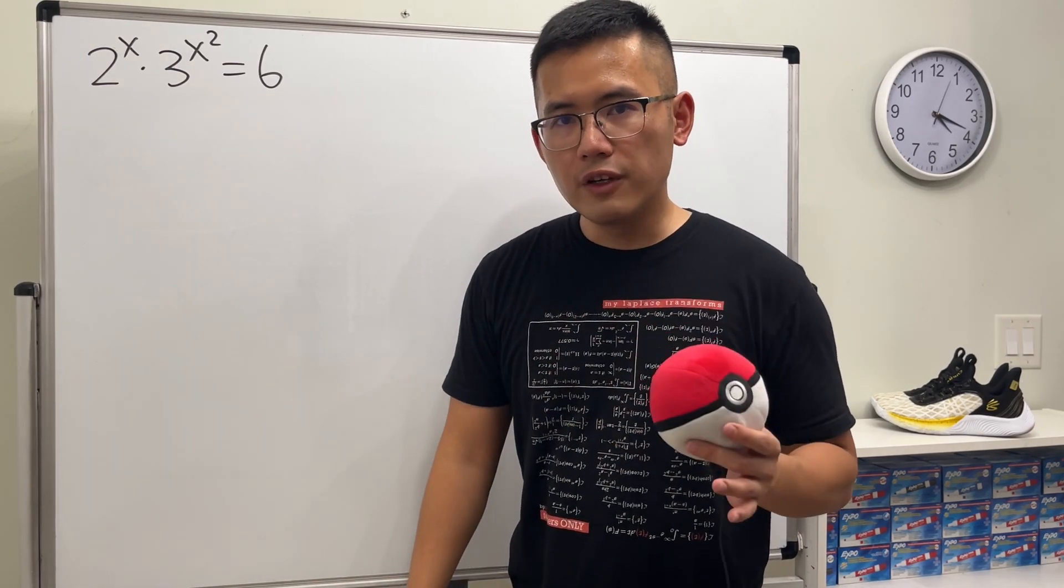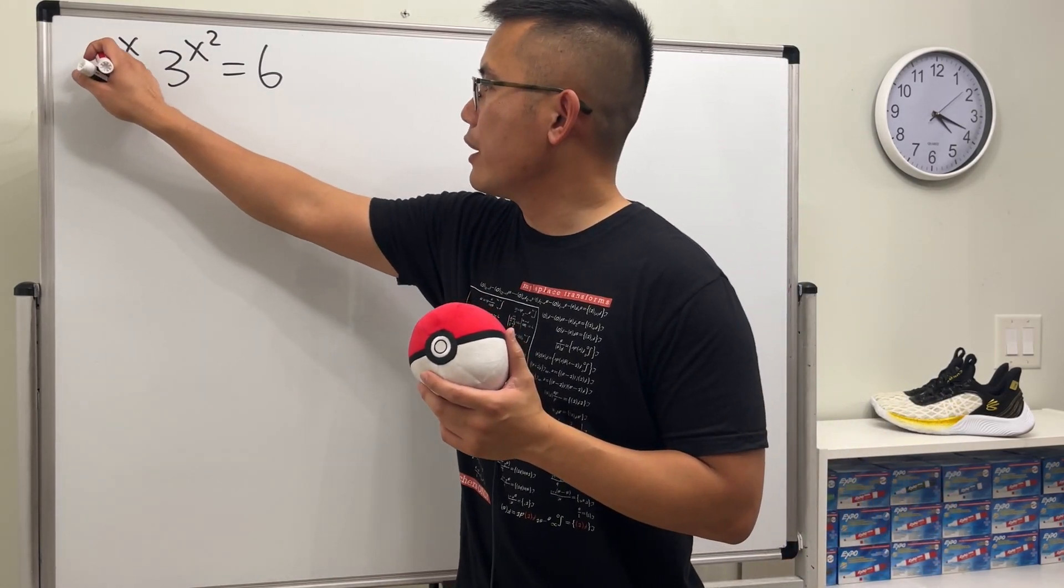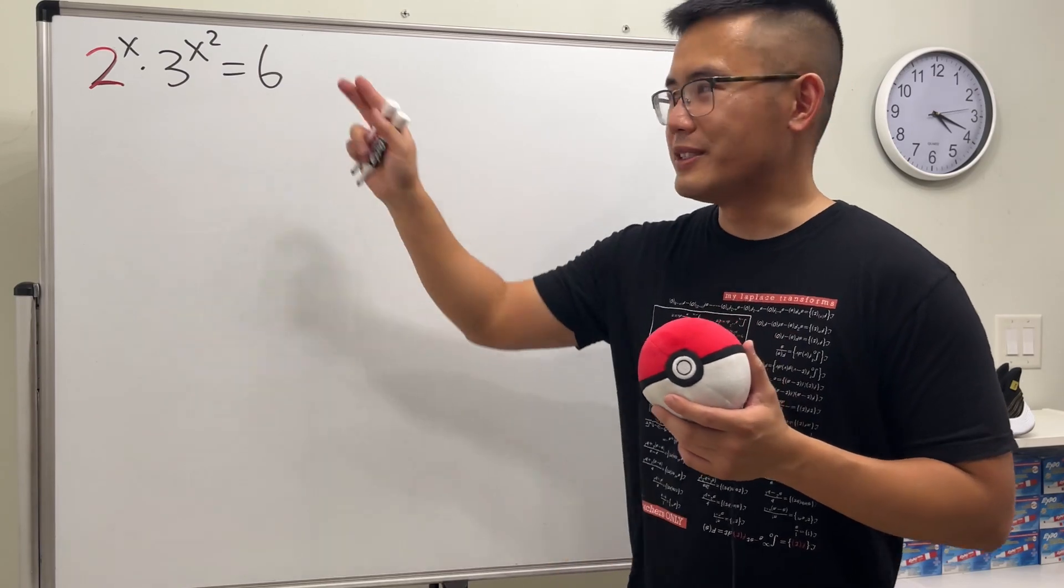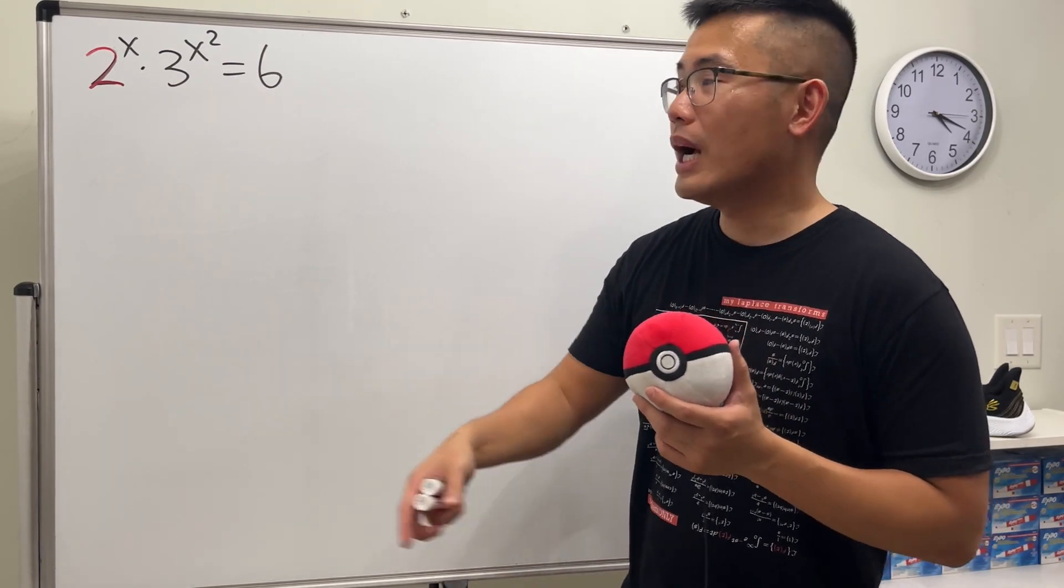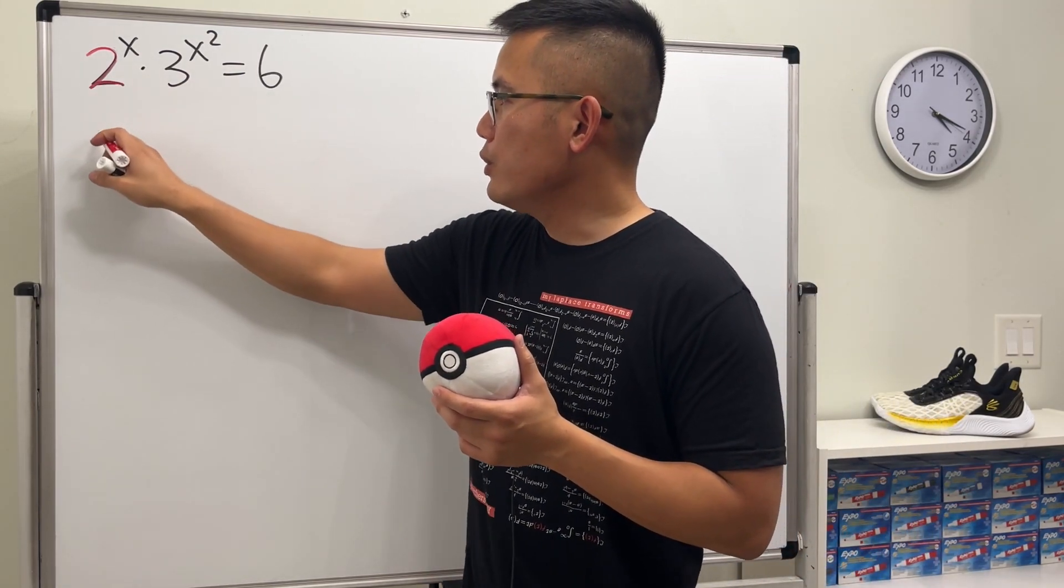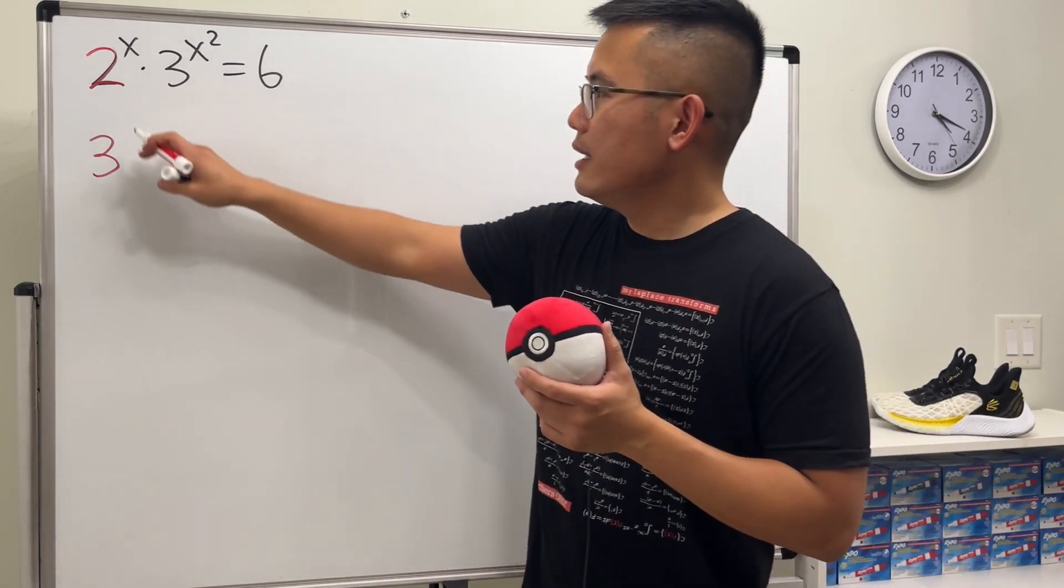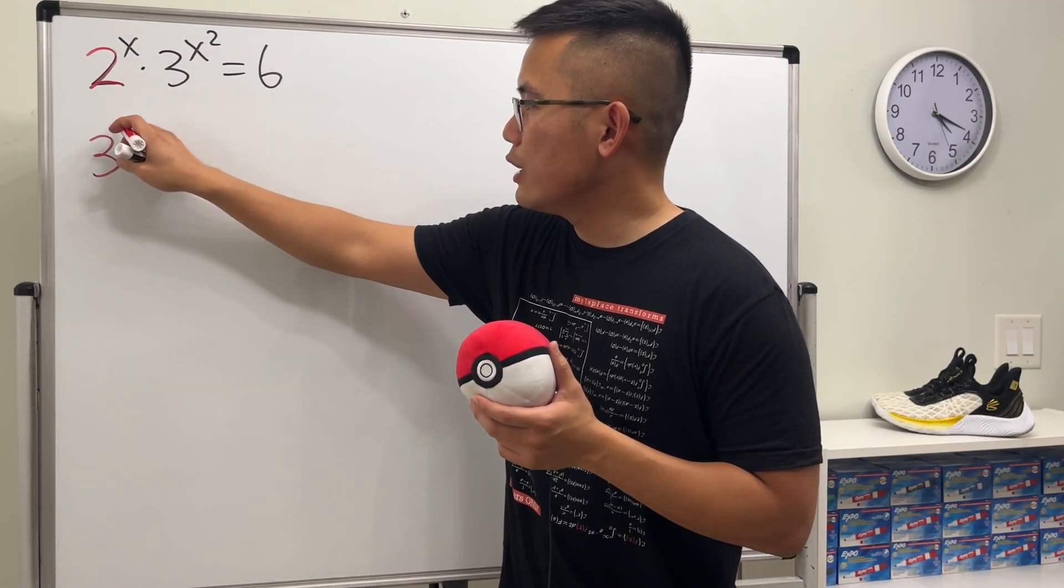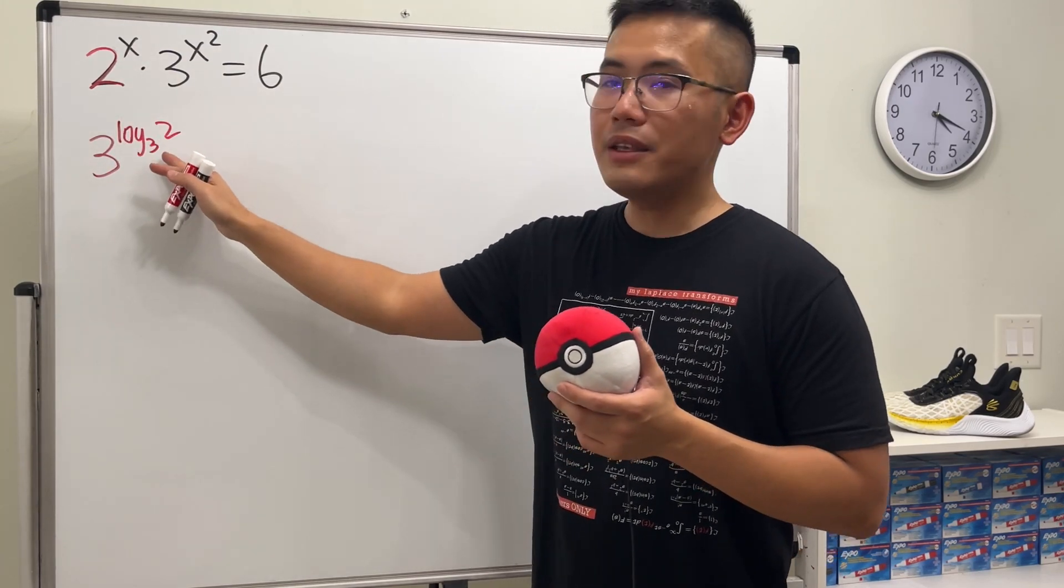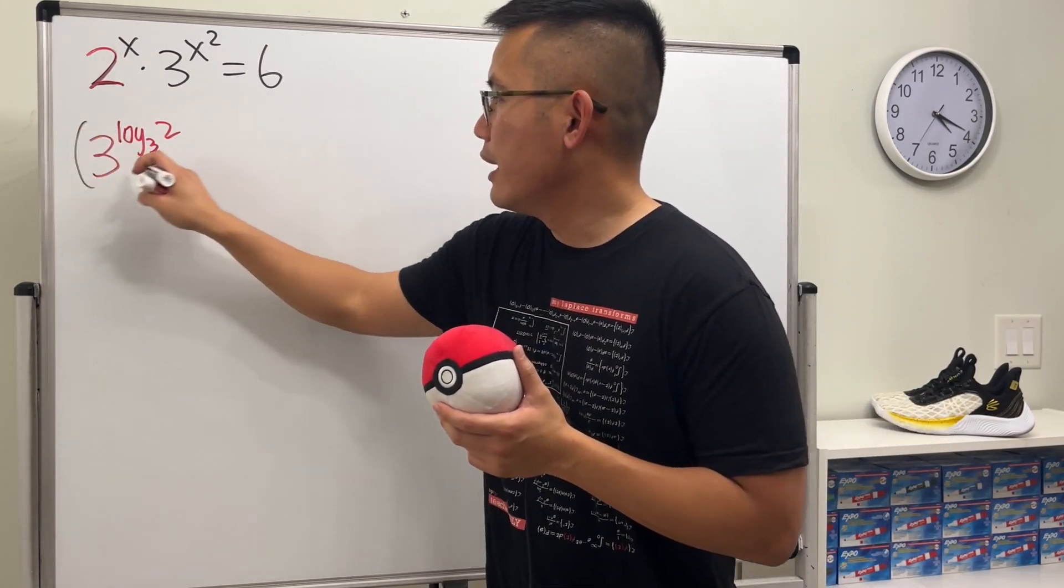But in order to do so we must have the same base. So let's look at the 2 right here and think about how can we change that to become a 3. Please don't say just add one to it because we have to deal with the exponent. For the 2, we really want to see a 3, but it's okay as long as we put 3 and then raise to the log base 3 and then just write down whatever this is inside here, because 3 and log base 3 will cancel so we still have the 2 back.